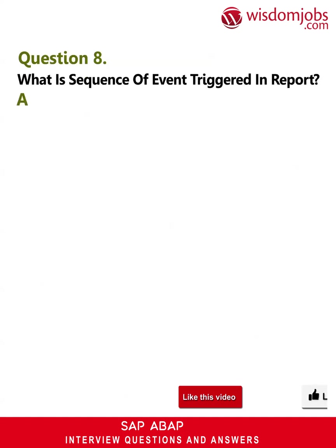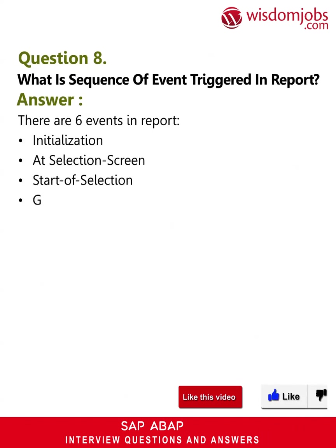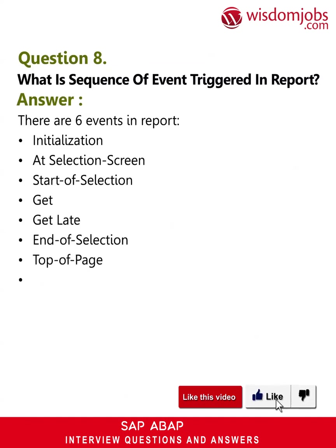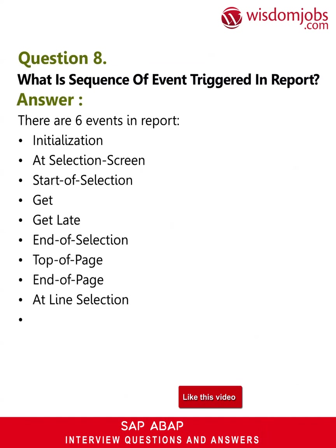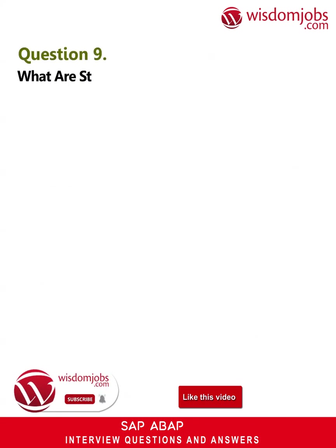Question 8: What is the sequence of events triggered in a report? Answer: There are six events in a report: Initialization, At Selection Screen, Start of Selection, Get, Get Late, End of Selection, Top of Page, End of Page, At Line Selection, At User Command, and At PF nn.